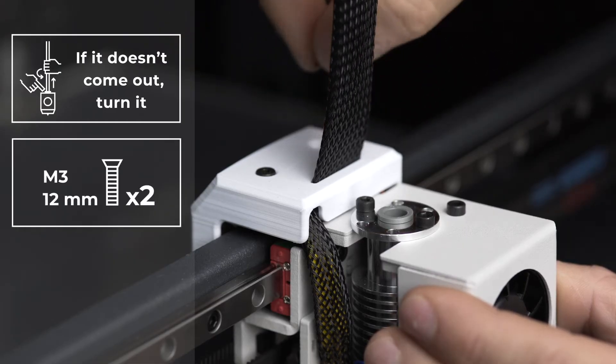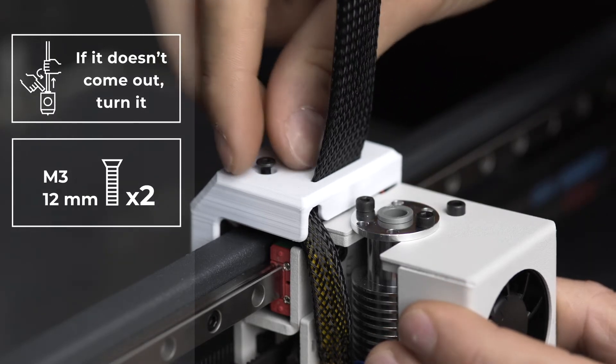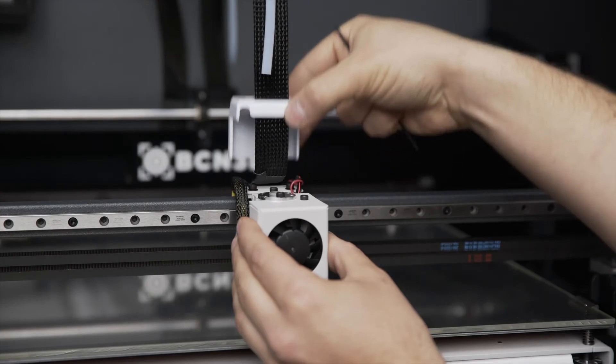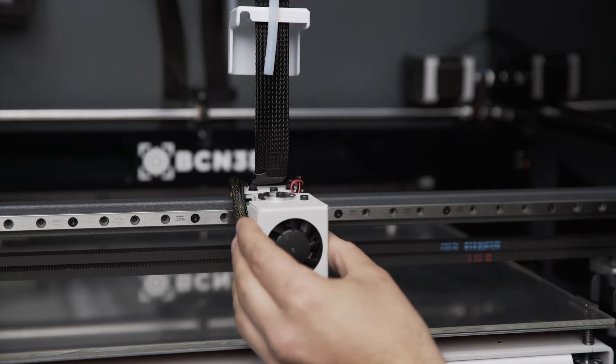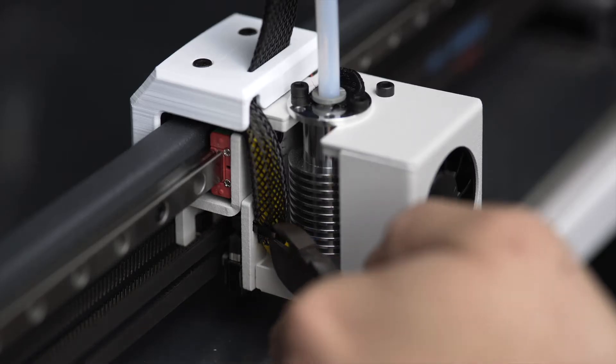Remove the two screws holding the connection cover and slide this piece up. Cut the zip tie holding the hotend cable.